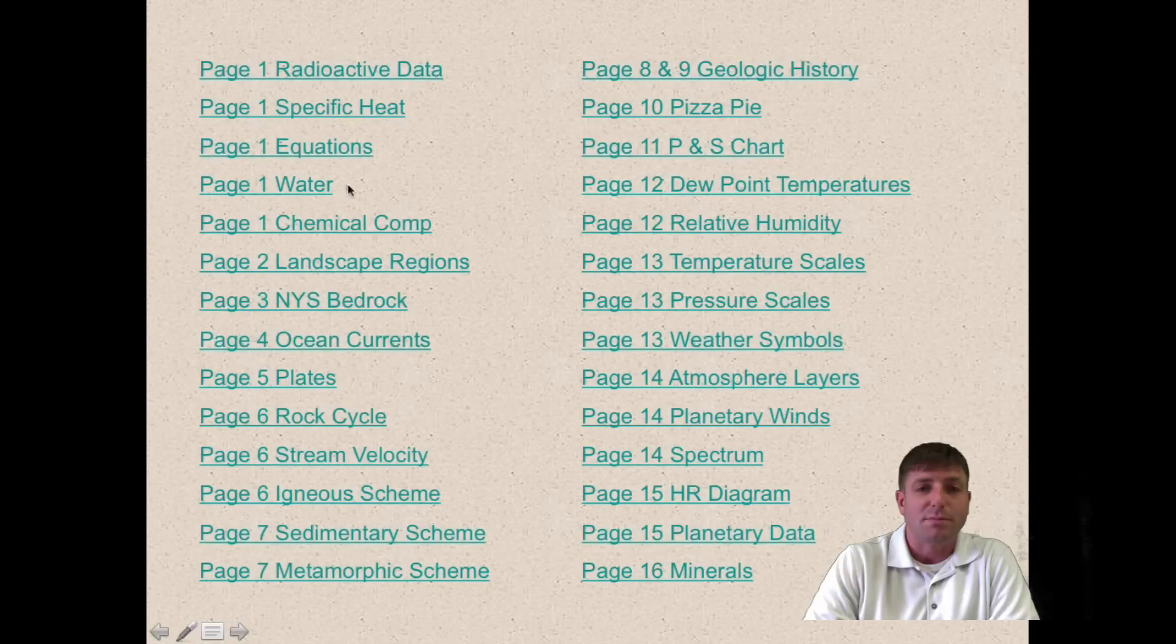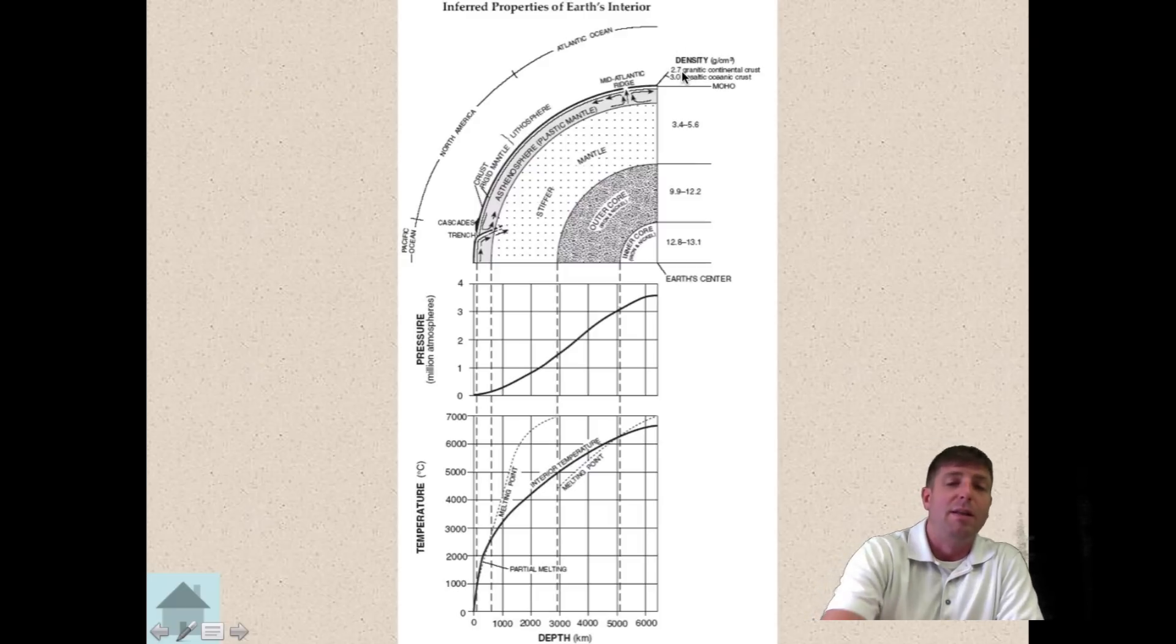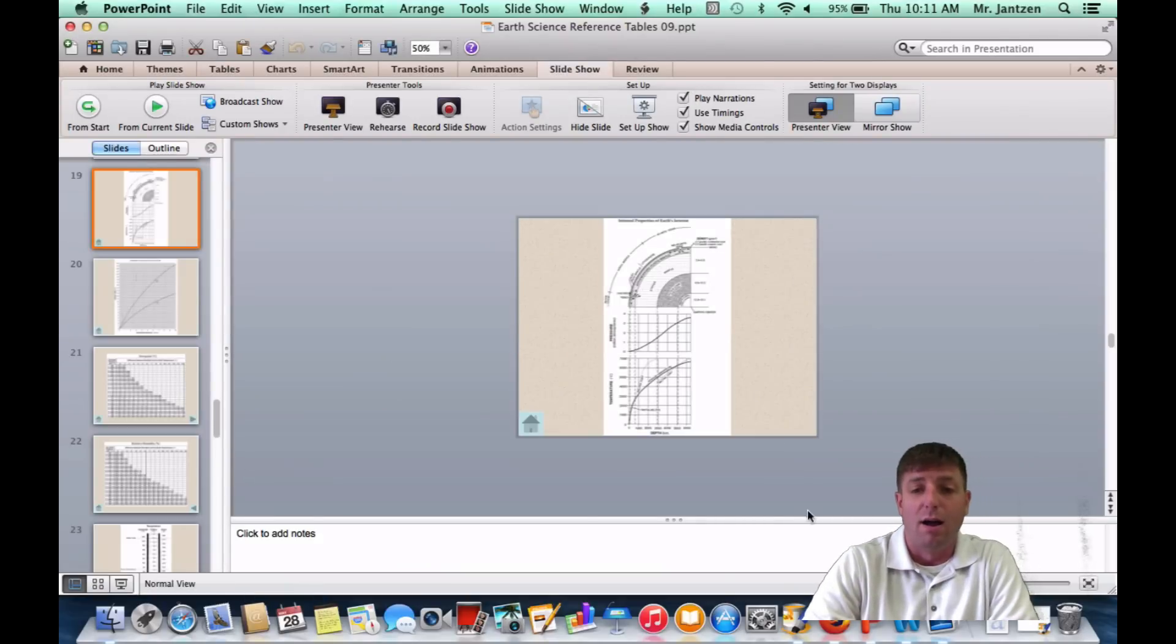Actually, this concept, there is a little part of it in the reference tables. So if you pull out your reference tables, and once again, you go to your pizza pie chart, which I like to call it, right up here in the chart, it's talking about granitic continental crust and basaltic oceanic crust. So it tells you that oceanic crust is basalt, and it tells you the density, 3.0. So come to your reference tables when you're talking about either continental crust or oceanic crust.